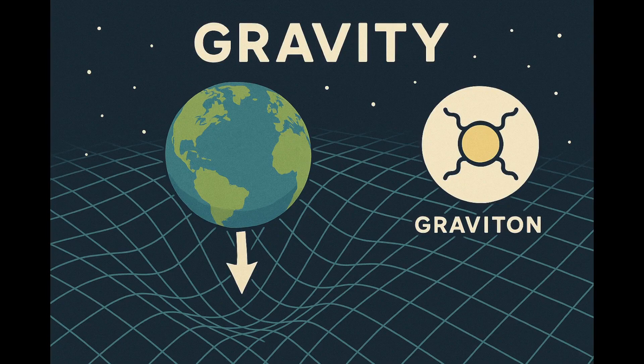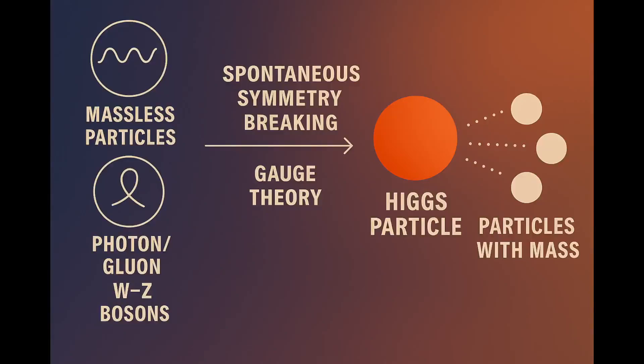The fourth fundamental force of nature, gravity, is different in kind. It is not mediated by a vector boson but by a tensor particle of spin two, the hypothetical graviton. At the fundamental level, all of these particles are massless, and all these forces respect a deep and unifying symmetry known as the gauge principle. But this symmetry is not absolute — it is spontaneously broken via the Higgs particle, the only known elementary particle of spin zero in nature.